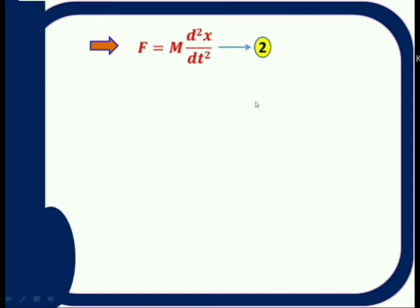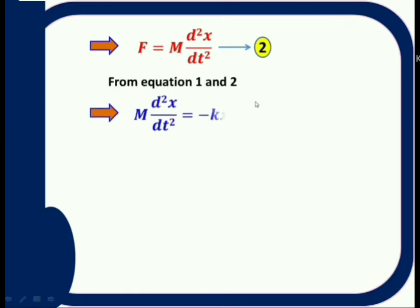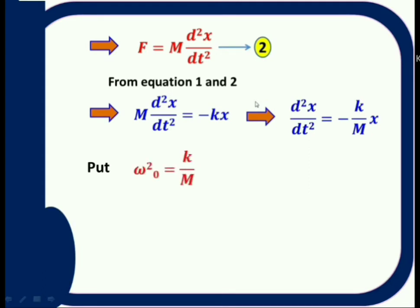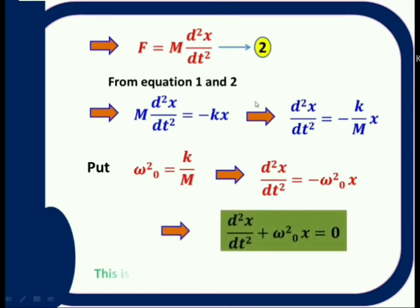From equations one and two, the left-hand sides are equal, so we equate the right-hand sides: m·d²x/dt² = minus kx. That implies d²x/dt² = minus(k/m)·x. Here k is the force constant and m is the mass — both are constants. Let k/m = ω₀². Then the equation becomes d²x/dt² + ω₀²x = 0. This is the equation of motion of simple harmonic motion.